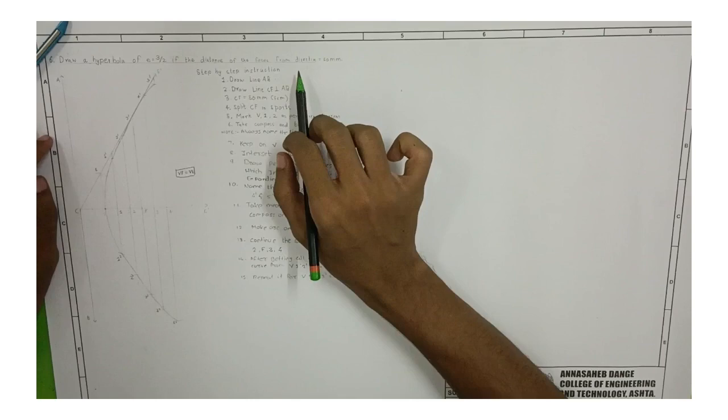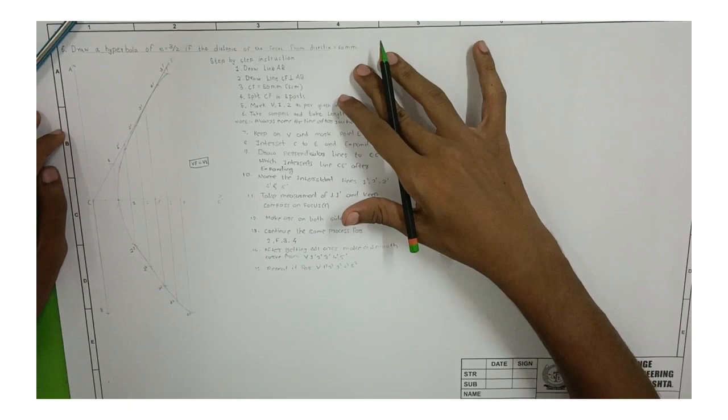Now we are going to see how to draw a hyperbola of eccentricity 3 by 2 if the distance of the focus from directrix is 50 millimeter. So this is a diagram and these are the step-by-step instructions.